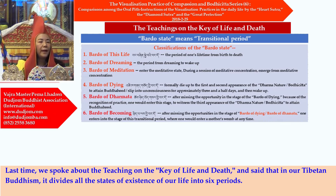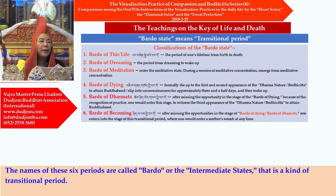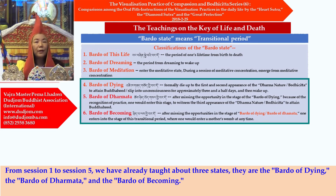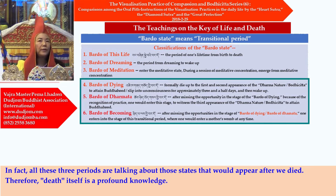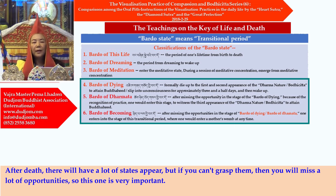Last time we spoke about the teachings on the key of life and death, and said that in our Tibetan Buddhism, it divides all states of existence of our life into six periods. The names of these six periods are called Bardo, or the intermediate state — the transitional period. From session one to session five, we have already taught about three states: the Bardo of dying, the Bardo of Dhammata, and the Bardo of becoming. All three periods are talking about those states that would appear after we died. Therefore, death itself is a profound knowledge — if you can't grasp the states after death, you will miss many opportunities.